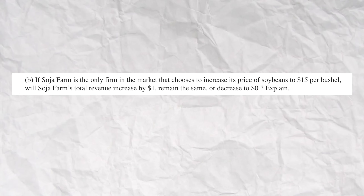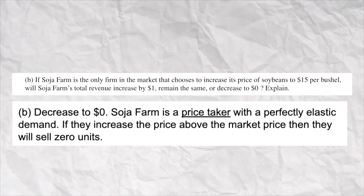In part B, they say if this one firm raised its price $1, will revenue increase, remain the same, or decrease to zero — and explain. The right answer is decrease to zero. Remember, this is perfect competition, so they're price takers. If they raise the price at all, no one's going to buy from them, and the quantity they're going to sell is zero.